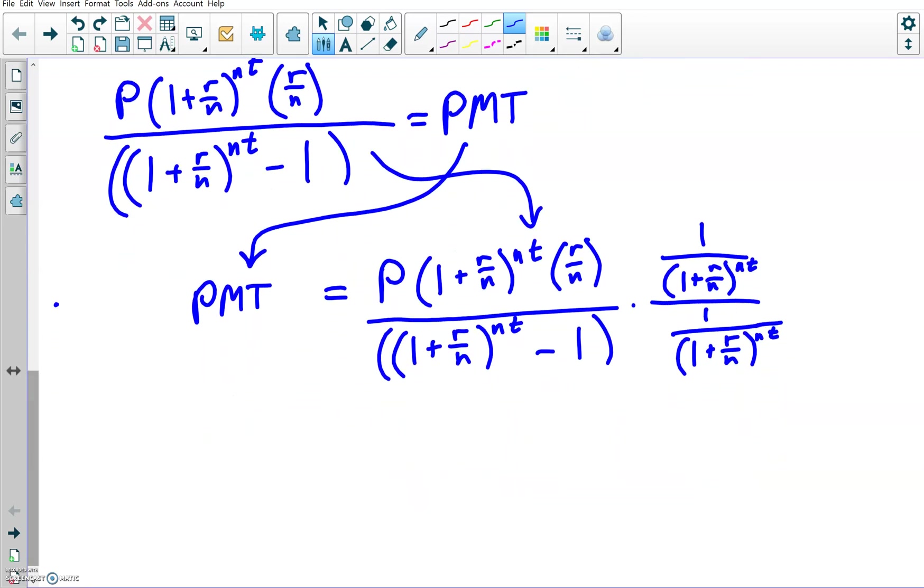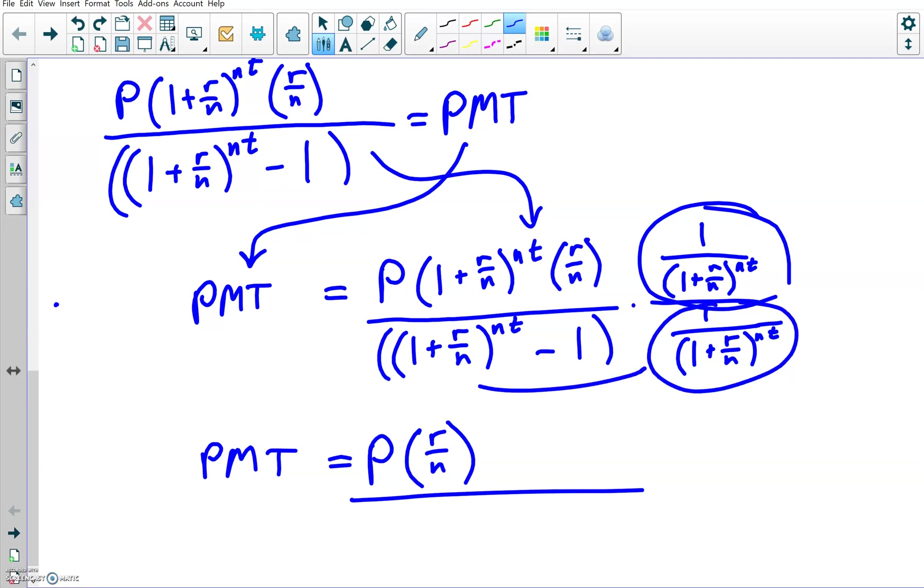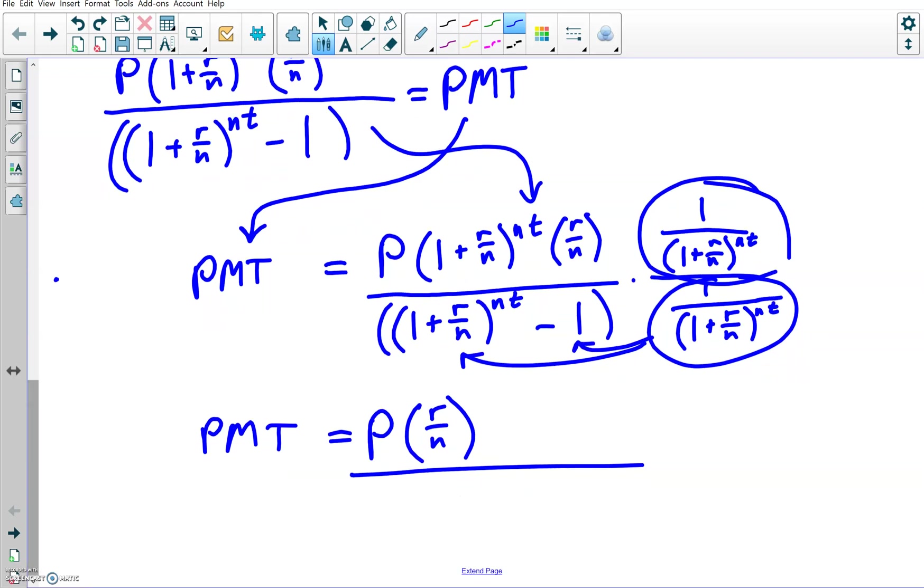Come down here, we just multiply across the top and we'll get p. The 1 plus r over n to the nt will go over this one and that'll be the same thing, which is just 1, so that essentially just goes away. You're left with r over n. Down below, I'm going to take this one and distribute into here and distribute into here. I will get in the parentheses a 1 from the 1 over 1 plus r over n to the n times t power times 1 plus r over n to the n times t power, and then I'll get minus 1 times that fraction.